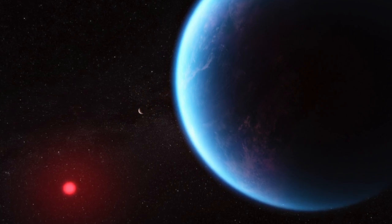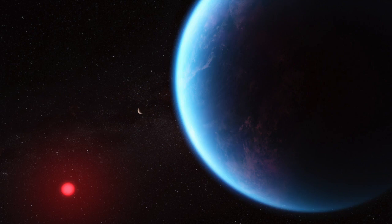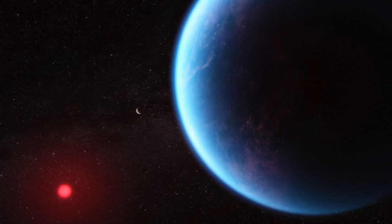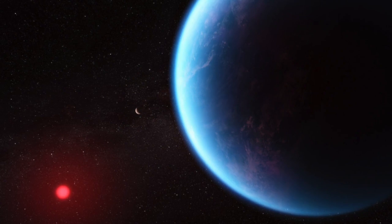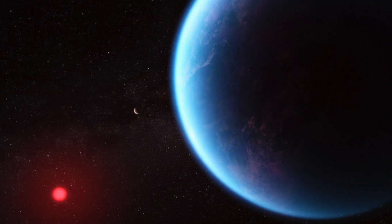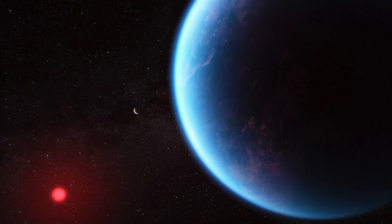The planet in question is K2-18b, a super-Earth 8.6 times as massive as Earth which orbits the red dwarf star K2-18, 110 light years from the Sun, in the constellation Leo.